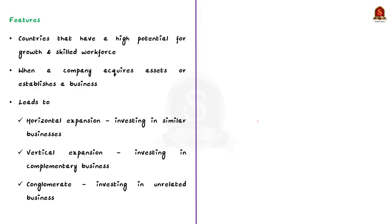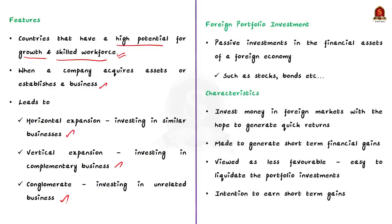FDI is commonly made in countries that have high potential for growth and a skilled workforce. FDI can happen when a company acquires assets or establishes a business in a foreign country, and it is a common practice to expand business to new countries. A company can either merge or enter into a joint venture with a foreign company. FDI can lead to horizontal expansion, vertical expansion, or a conglomerate. In horizontal investment, the company invests in similar businesses; in vertical investment, in complementary businesses; and in conglomerate investment, in a totally unrelated business. India opened up to foreign investment in 1991.